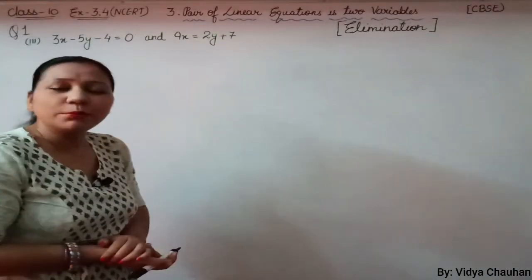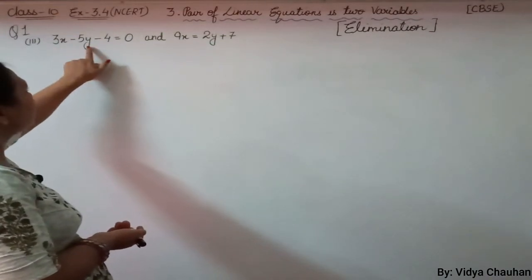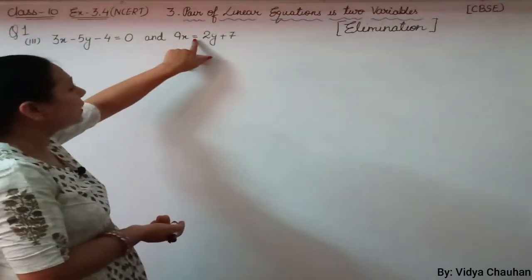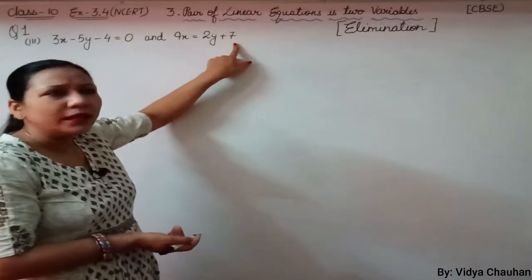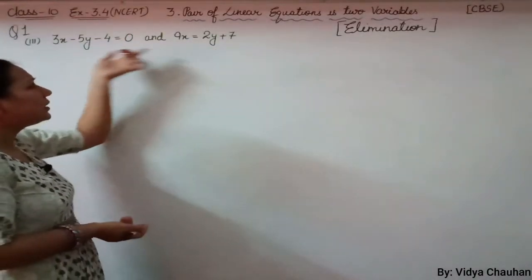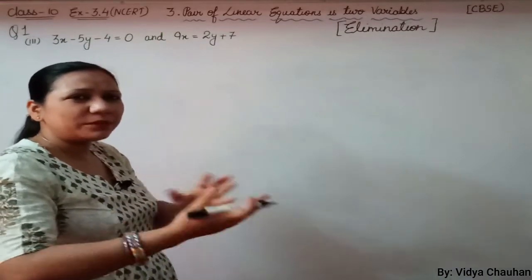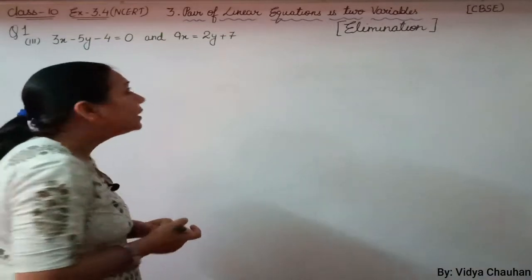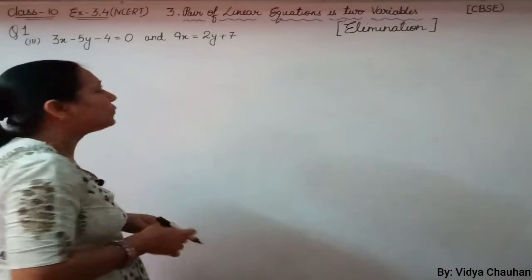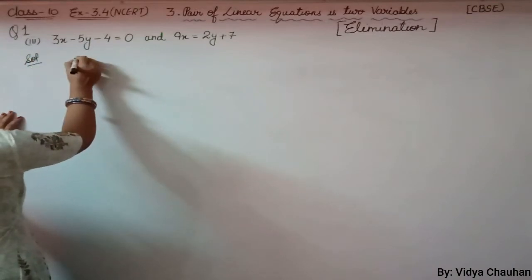I have taken Exercise 3.4, Question Number 1, third part. Our first equation is 3x minus 5y minus 4 equals to 0, and the second equation is 9x equals to 2y plus 7. You can see that we are given two equations but they are not in the same format — there is some shuffling. So let us first write them in a proper format that will be feasible for us to solve.